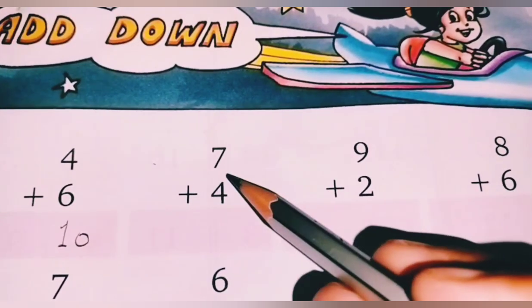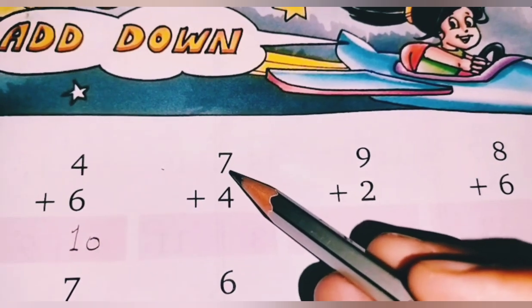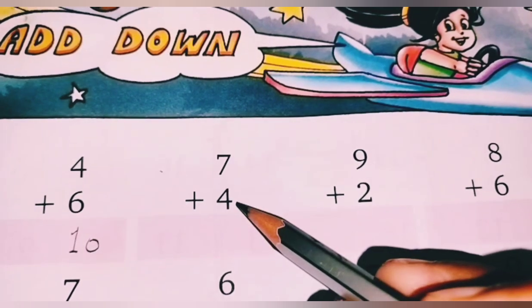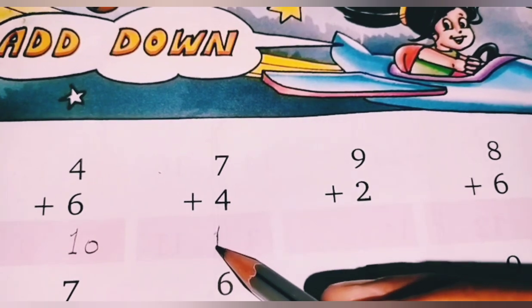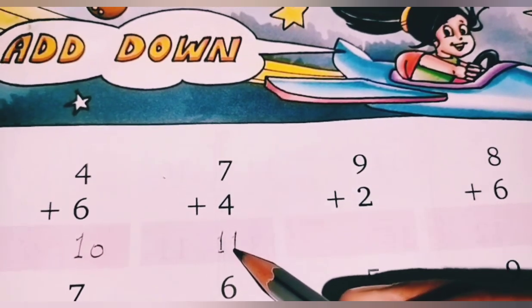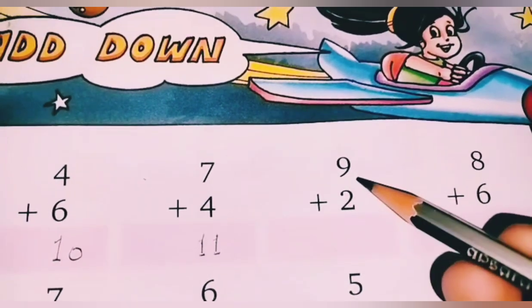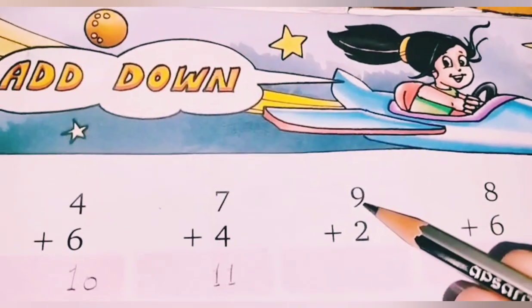Now we will change to number 2. Now we will have 7. This is 4. Then 7 plus 4. How do you see? 7 plus 4, students, 11. 11, okay.